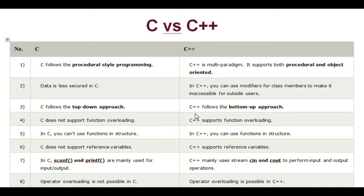In C, you can't use functions in structure. In C++, you can use functions in structure. C does not support reference variables. C++ supports reference variables.